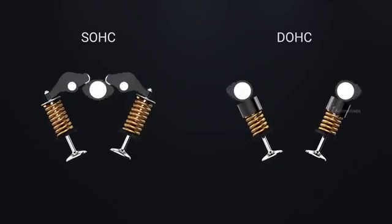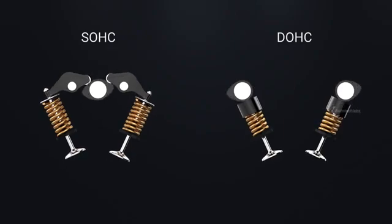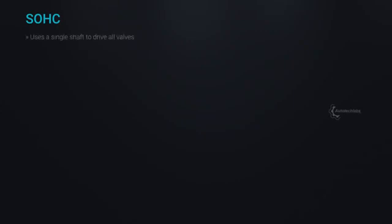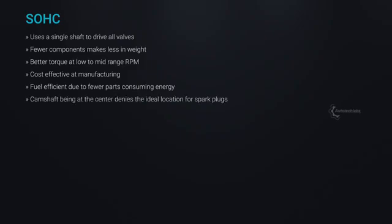When choosing between SOHC and DOHC engines, both have their own pros and cons. SOHC uses a single shaft to drive all valves. Fewer components make it lighter in weight, with better torque at low to mid-range RPM and cost-effective manufacturing. It is fuel efficient due to fewer parts consuming energy. However, the camshaft being at the center denies the ideal location for spark plugs.